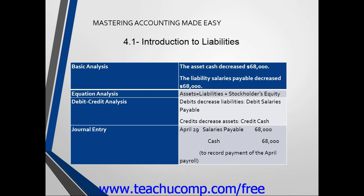Debits decrease liabilities, so we need to debit salaries payable. Credits decrease assets, so we would credit cash. Our journal entry would show the date of the transaction, April 29th, and then salaries payable is debited while cash is credited.